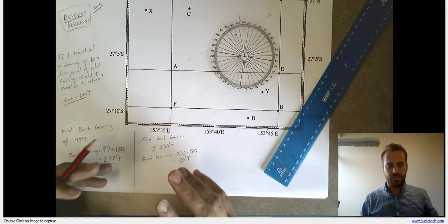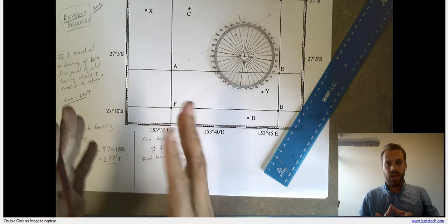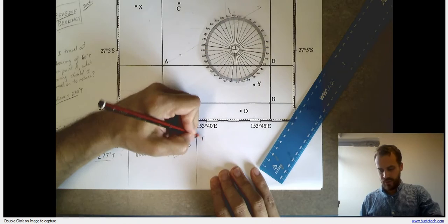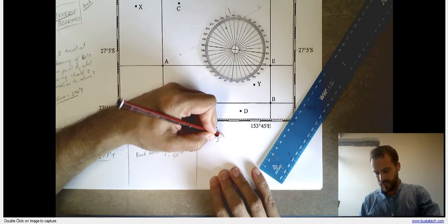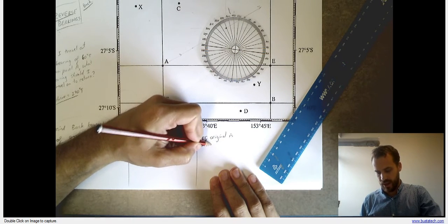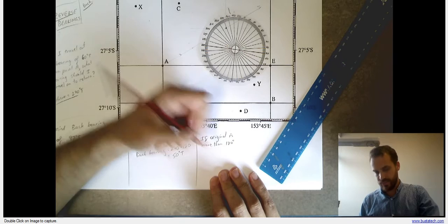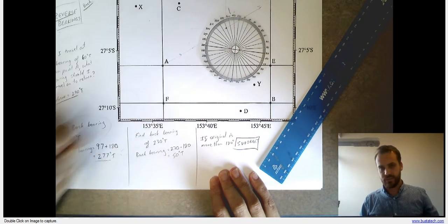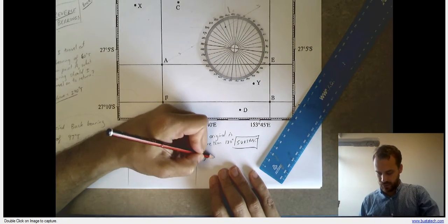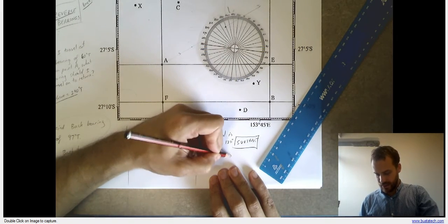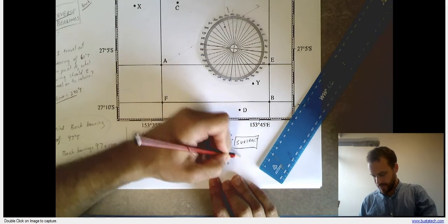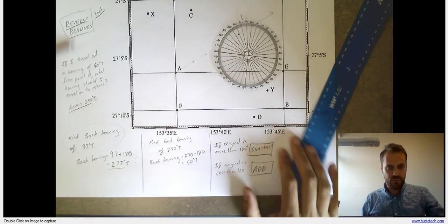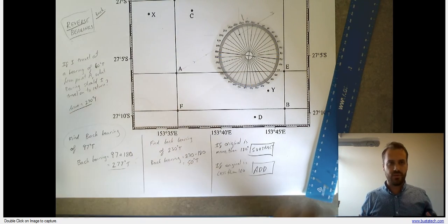When you're finding reverse bearings or back bearings, you need to make a choice: do I add 180 degrees, or do I subtract 180 degrees? Very, very simple. If the original bearing is more than 180 degrees, subtract. If the original is less than 180 degrees, add. That's reverse bearings. You really need to practice it — make sure you know what you're doing. Have a go at the questions.